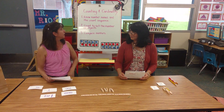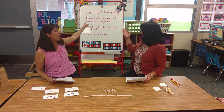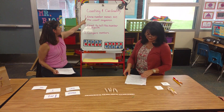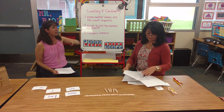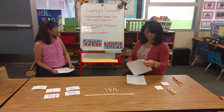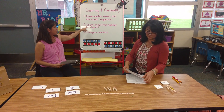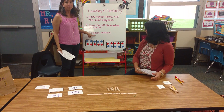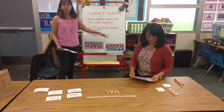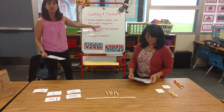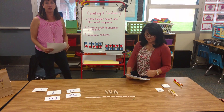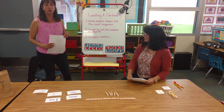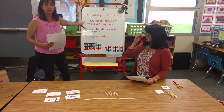The standard we're going to be talking about is counting and cardinality. There are three components to it. One, know number names and the count sequence. Two, count to tell the number of objects. And three, compare numbers. Now there's a lot more depth to this — this is just kind of the general framework of this standard, and some of the activities we're going to show you will address these standards.